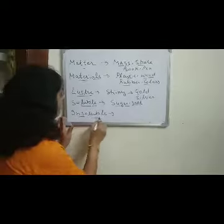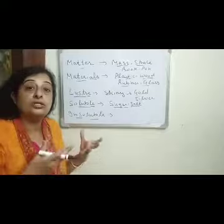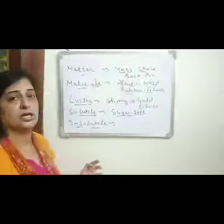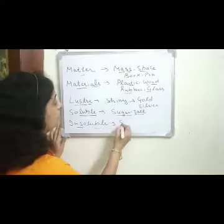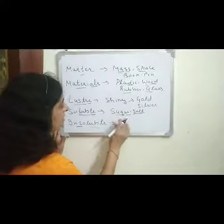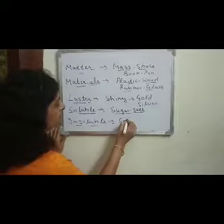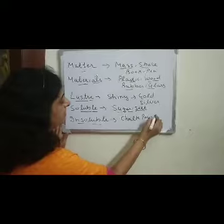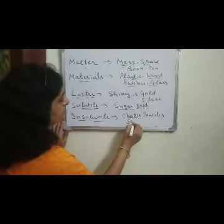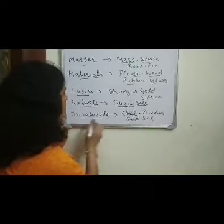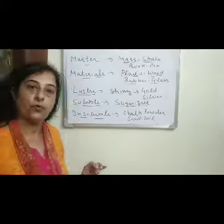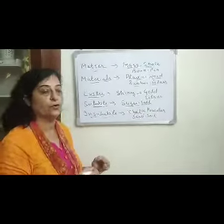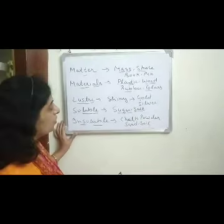Insoluble materials are those which do not dissolve or disappear in water even after stirring for a long time. For example, chalk powder. These are insoluble in water — they will not dissolve or disappear even after long stirring.